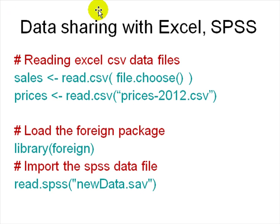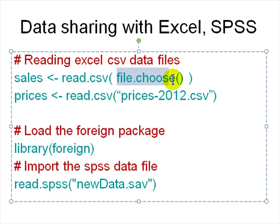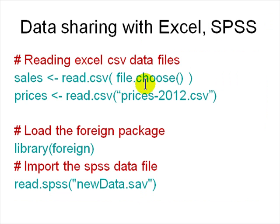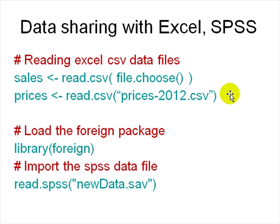To read from Excel, use 'read.csv()' with 'file.choose()' — a pop-up lets you pick a file and reads it into a variable called 'sales'. Or give it a string filename and it looks in the current folder. You can also read SPSS data by using the 'foreign' library: 'library(foreign)' and then 'read.spss("somefile.sav")'. We'll see later how to process the variable after reading it in.